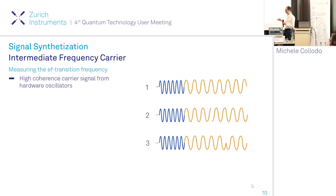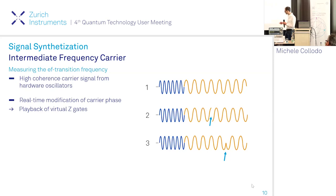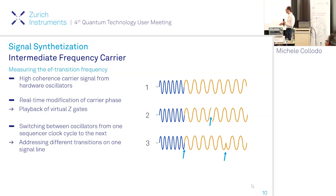Looking at the carrier signal provided by the hardware oscillators: since we have real-time access to modification of the carrier phase, we can implement virtual Z gates by introducing phase jumps at specific points, timed with the pulse envelopes. Additionally, since we can switch between oscillators, we can use one oscillator for the GE transition carrier and one for the EF transition carrier, addressing different transitions back to back in a phase-coherent way.